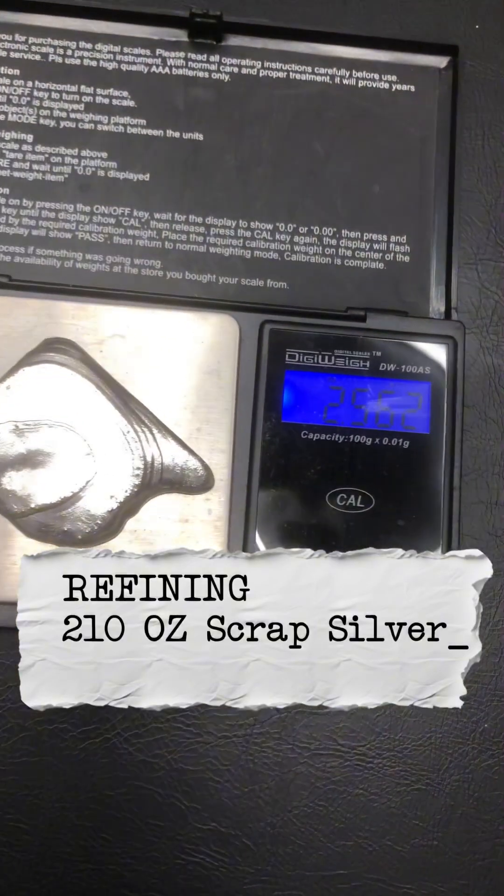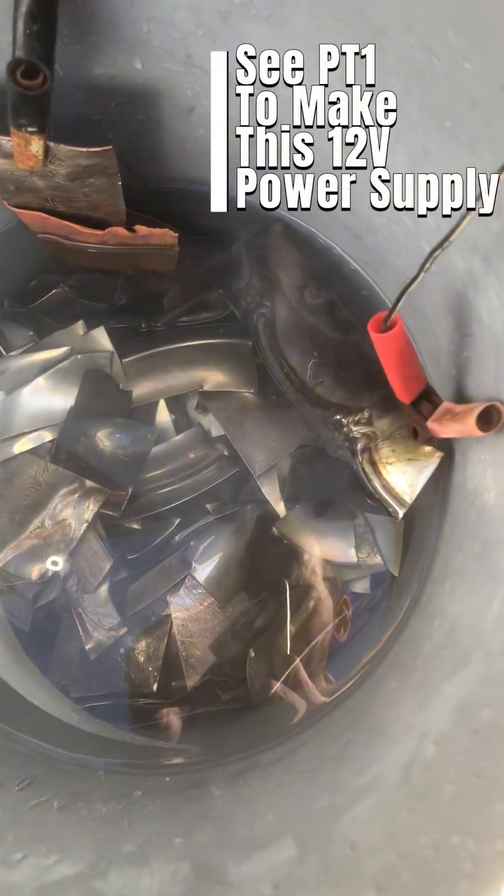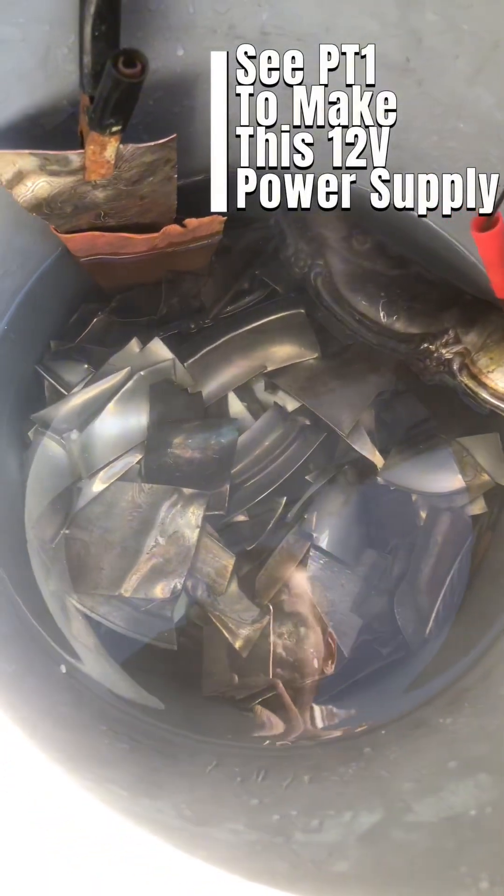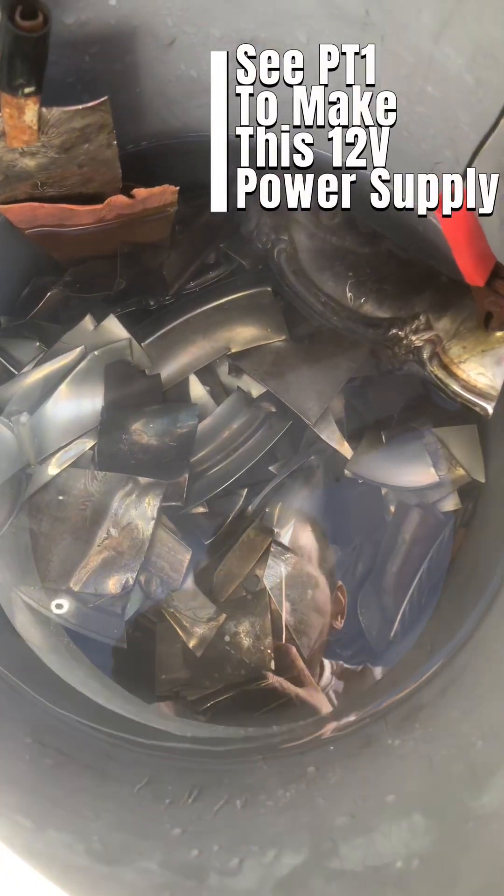Refining 210 ounces scrap silver, part three. When doing this, the best silver plated items to recover will be weighted sterling silver plated forks, knives, and spoons. Though these silver plated plates contain less silver than any other silver plated items I mentioned, reverse electroplating will save us on cost.